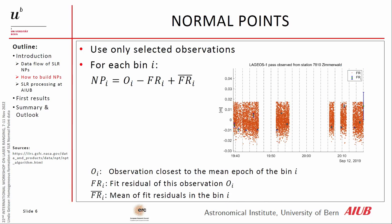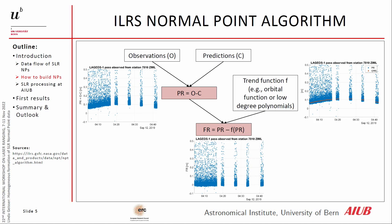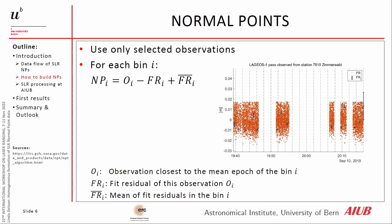Now we would like to build the normal points. We select which data should be used — I will say more on this later. We take the so-called good data. For LAGEOS, normal points are built every two minutes. We take the closest observation to the mean epoch of this two-minute bin, subtract the fit residuals — the random error of that single observation — and add the mean random error of the total bin, reducing the error of the observation to the random error of the bin itself.